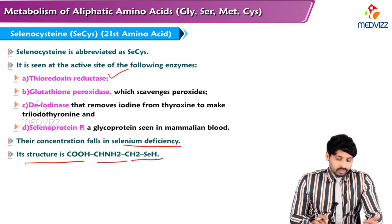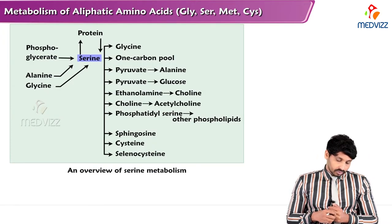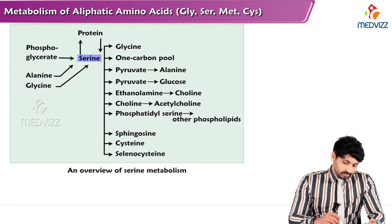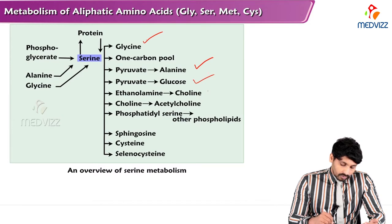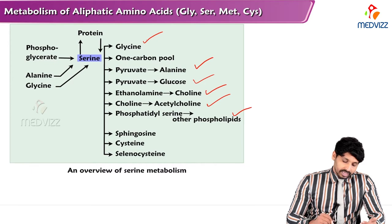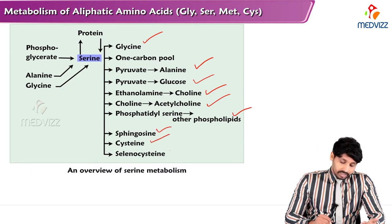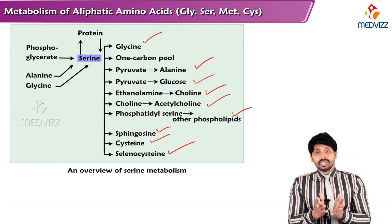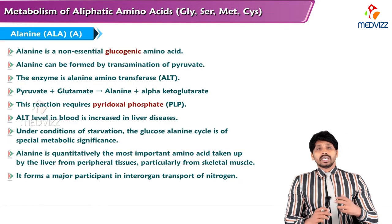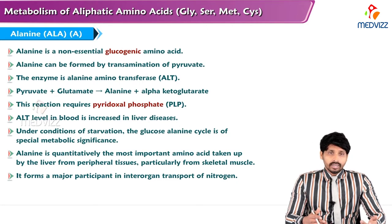The functions of serine include: making glycine, contributing to the one-carbon pool, conversion to pyruvate/alanine (glucogenic), choline formation, acetylcholine formation, synthesis of phospholipids, sphingosine, phosphatidylserine, cysteine formation, and selenocysteine formation. So serine is required for all of these biosynthetic processes.